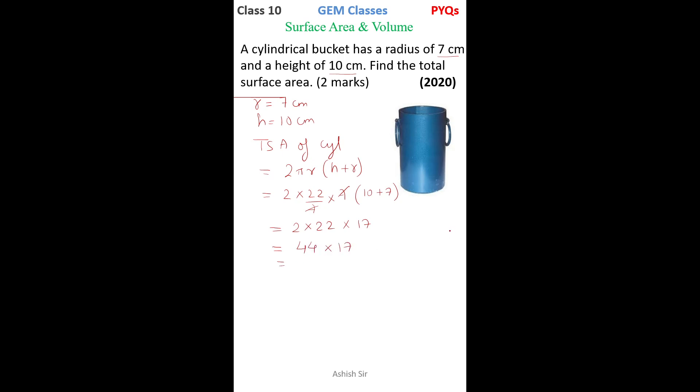Now we can do the multiplication here, so what we get is 748 centimeter square as total surface area of this cylinder.